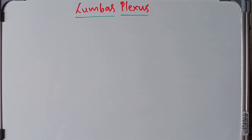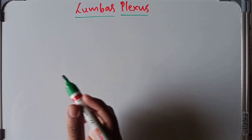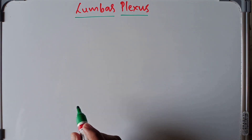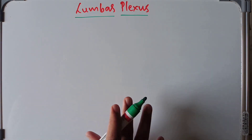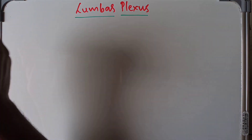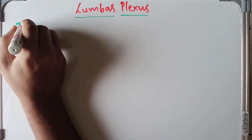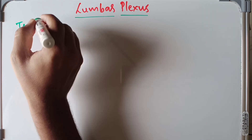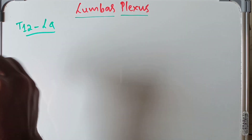Hey guys, welcome back. Today we are going to learn about the anatomy of the lumbar plexus. If you are new here, make sure to subscribe and watch our complete anatomy videos. I am going to teach the lumbar plexus in a very simple way. The lumbar plexus is formed by the T12 to L4 spinal segments.